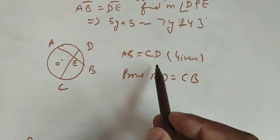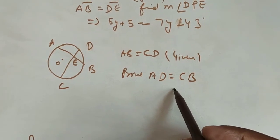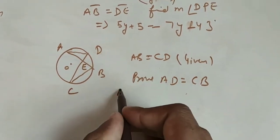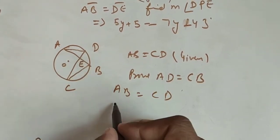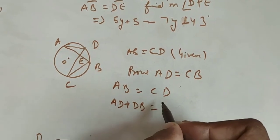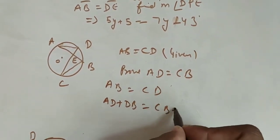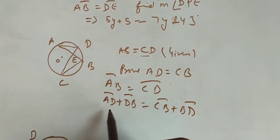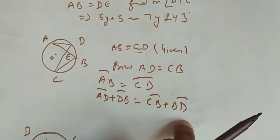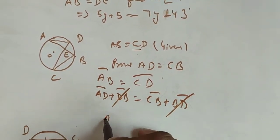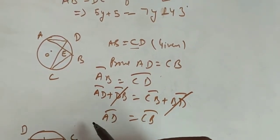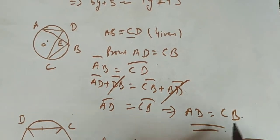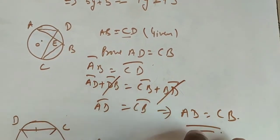Next, it is given that AB is equal to CD — prove that AD is equal to BC. If AB equals CD, then their corresponding arcs are equal. Arc AB can be written as arc AD plus arc DB, and arc CD equals arc CB plus arc BD. Since arc BD cancels from both sides, arc AD equals arc CB, and if arcs are equal then their corresponding chords are also equal, so AD equals BC.